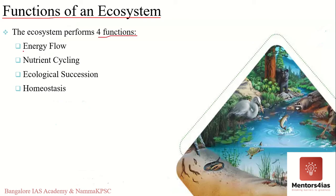First is energy flow, which involves the exchange of energy necessary to support life. The second function is nutrient cycling, which involves cycling of various nutrients between biotic and abiotic components. The third is ecological succession, which involves ecosystem development, and the fourth is homeostasis, which renders stability and feedback control mechanisms.